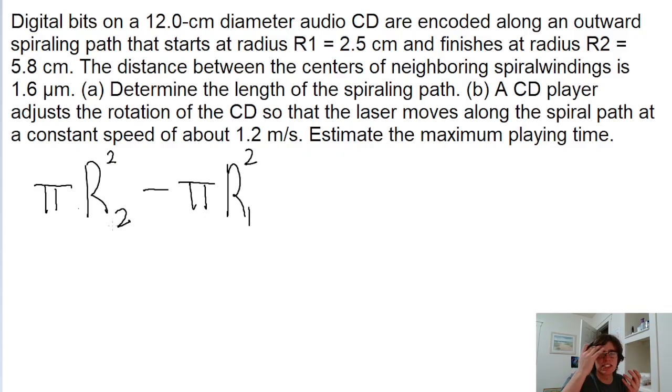And this total area is the same as the area occupied by the path once it's unwound, which is the length of the path, what we're trying to find, multiplied by the path's width. So all this is equal to the width of the path multiplied by the length.